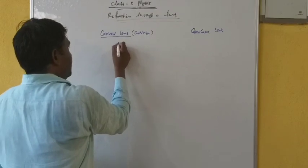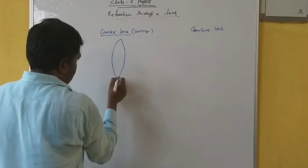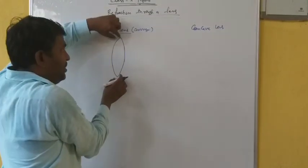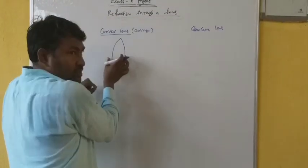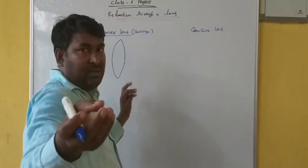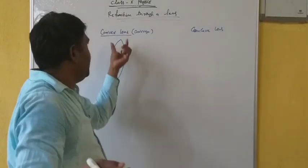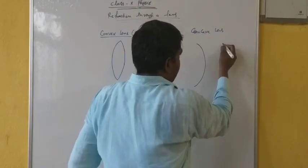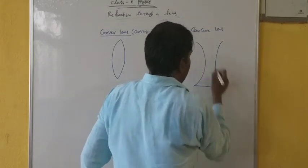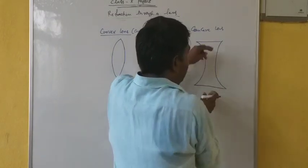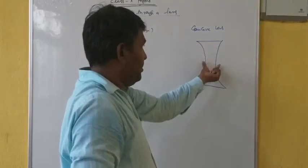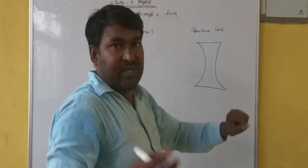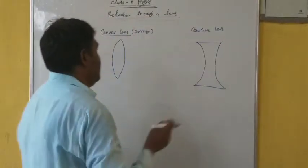This convex lens is thick in the middle and thin at the ends. By touching, we can realize whether it is convex or not. The concave lens is thin in the middle and thick at the ends — thick at ends but thin in middle. This is the identification of a convex lens by physical touch.